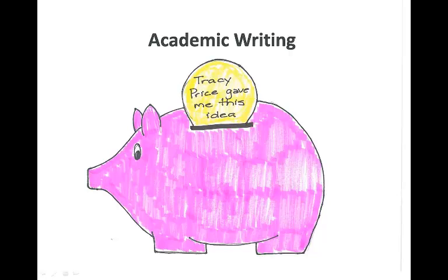We're looking for two things when we talk about adequate documentation in college. First, did you exercise what we call due diligence? Did you document every idea that's not your own, whether it's directly quoted, paraphrased, or summarized? And secondly, is it traceable? Can we go from where you used that information in-text to the list of sources at the end of your essay, and from there out to the real world to find the original source?